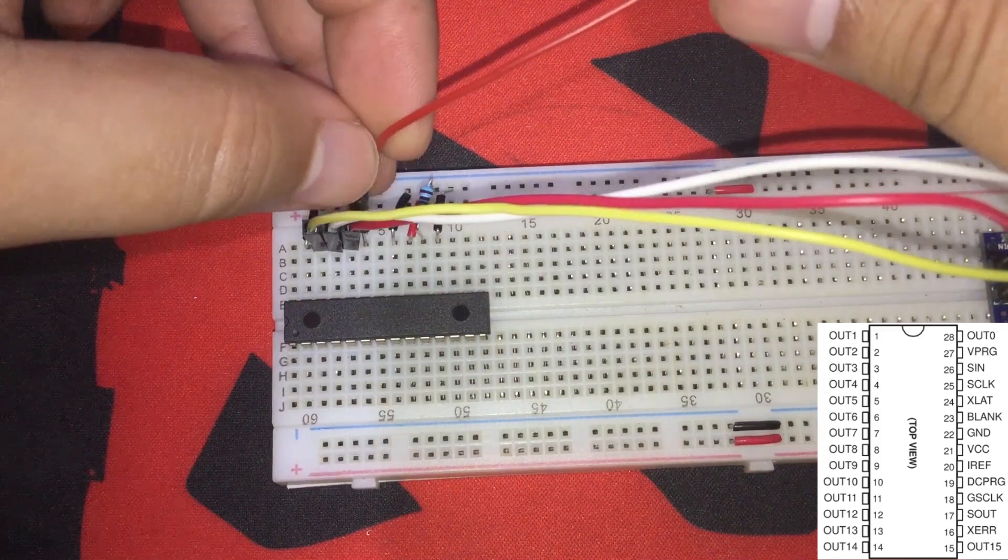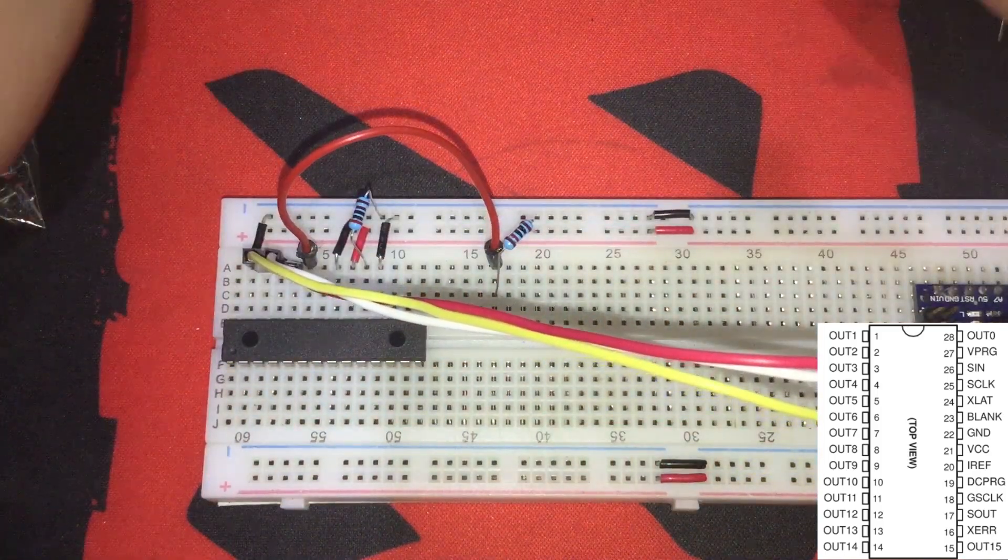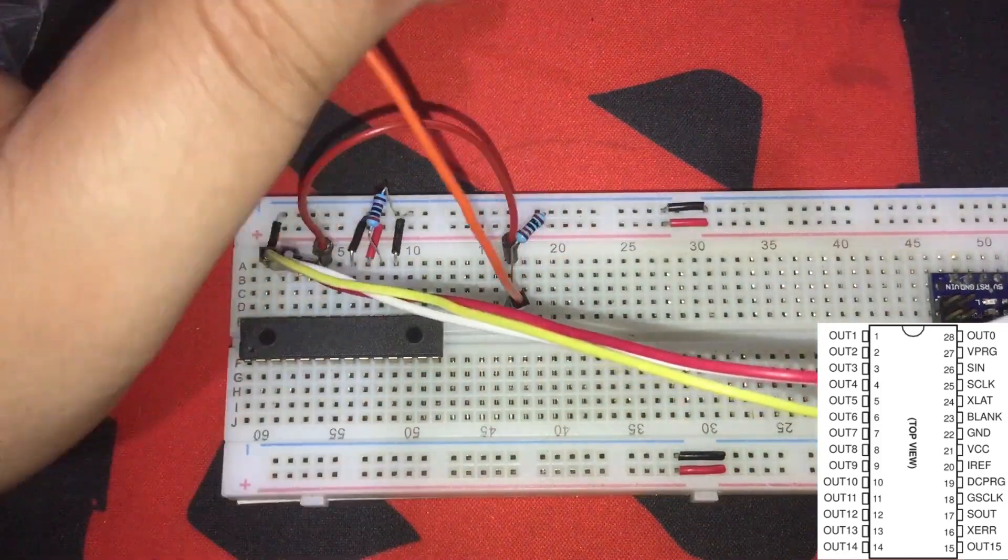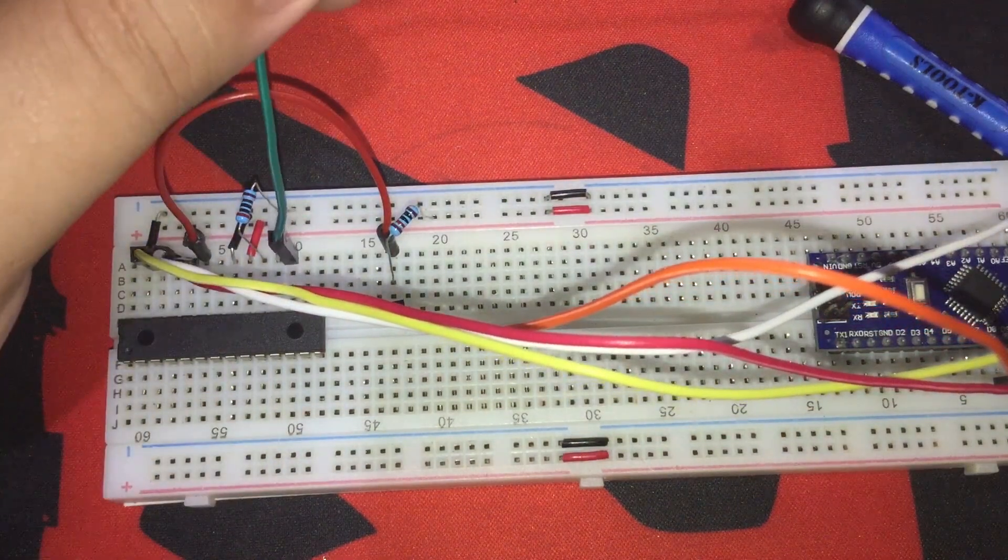IC pin number 24 or XLAT is connected to pin number 9. Then, IC pin number 23 or blank is connected to a 10K pull-up resistor that is connected to 5 volts. Then, pin number 10 on the Arduino. Like so. Then, IC pin number 18 or GSC-LK is connected to pin number 3.